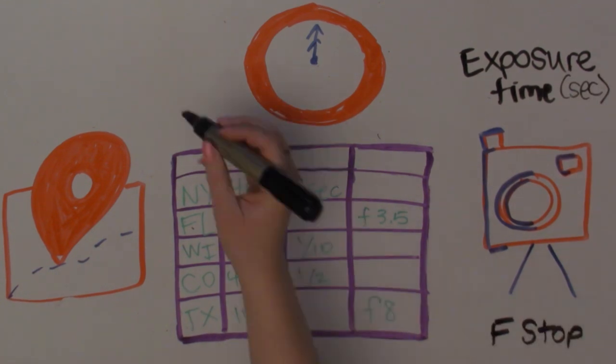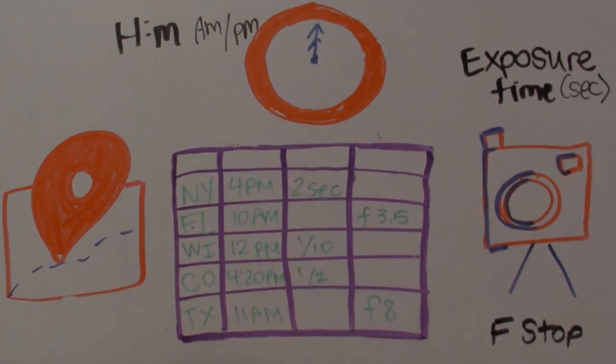You'll notice all of the photos have similar information about them. A location, a time taken, and something about the camera. To make sense of all of this, I need to know what all of these columns mean.